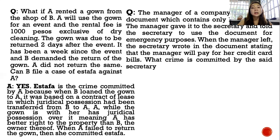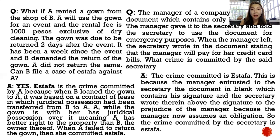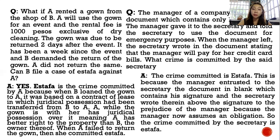Another example: the manager of a company has a blank document containing only a signature. The manager gave it to the secretary for emergency purposes. When the manager left, the secretary wrote on the document that the manager will pay for her credit card bills. The crime committed by the secretary is estafa — this falls under the third punishable act. The manager entrusted the blank signed document to the secretary, and the secretary wrote above the signature to the prejudice of the manager, who now assumed an obligation to pay the credit card bills.